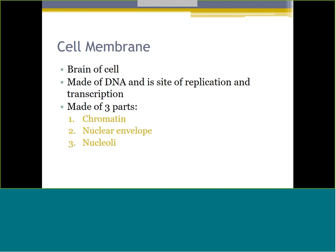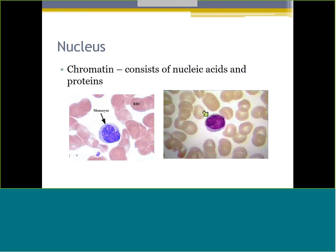Moving to the nucleus - that is always what we call the brain of the cell. It consists of DNA and is where we have replication and transcription. Part of the nucleus is made up of chromatin, and then we have the nuclear envelope and nucleoli. When we start to learn how to identify different white blood cells, I talk a lot about chromatin - whether it's really loose and stringy or really condensed. It plays a big role in identifying cells.